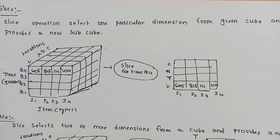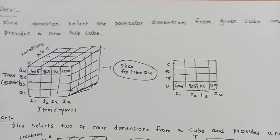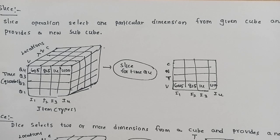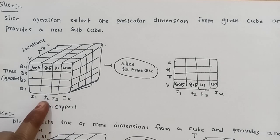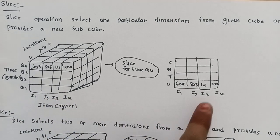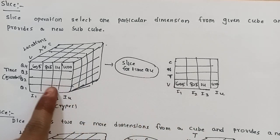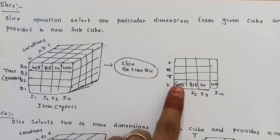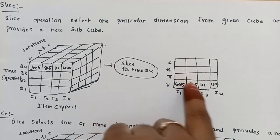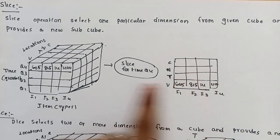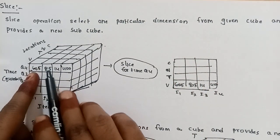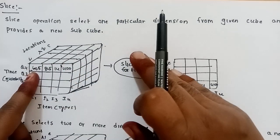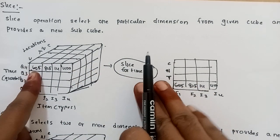Next is Slice. Slice operation selects one particular dimension from a given cube and provides a new subcube. One dimension is selected and separated to create a new cube. For example, selecting Q4 — a slice for the time dimension Q4 — creates a separate smaller cube.